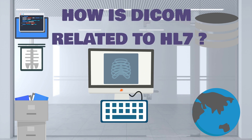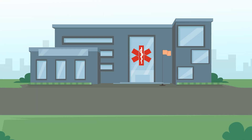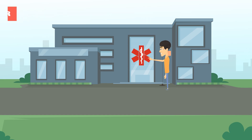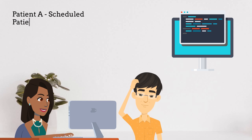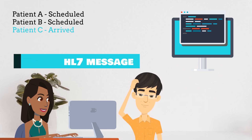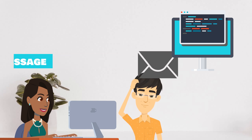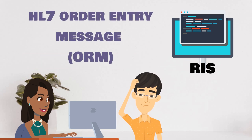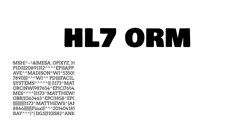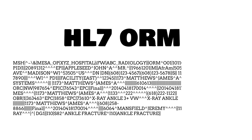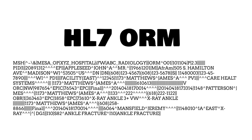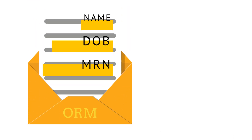How is DICOM related to HL7? A patient can be checked in to their MRI appointment when they arrive at an outpatient imaging center. A physician must place an order for the MRI exam, which is sent to the Radiology Information System. This is called an HL7 order entry message, called an ORM. The HL7 message will contain important patient identifiers such as name, date of birth, and medical record number.